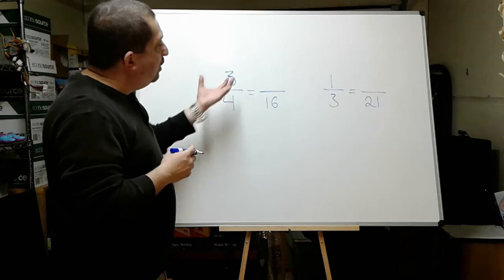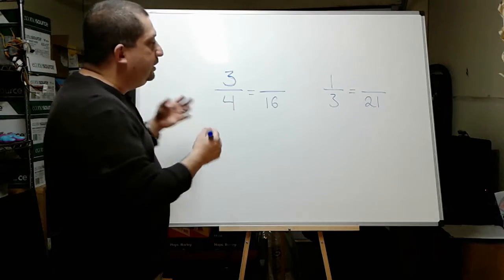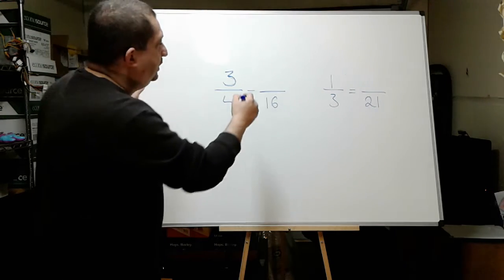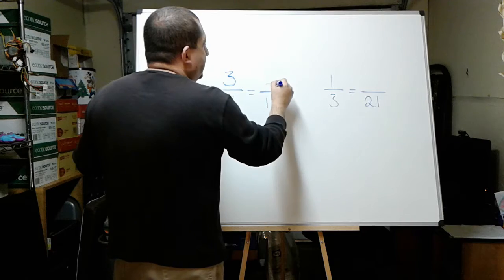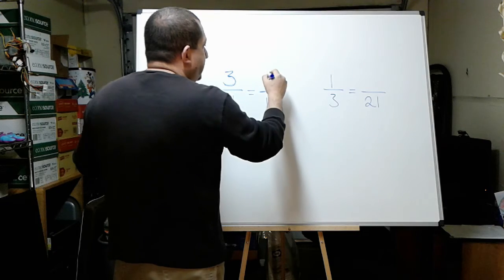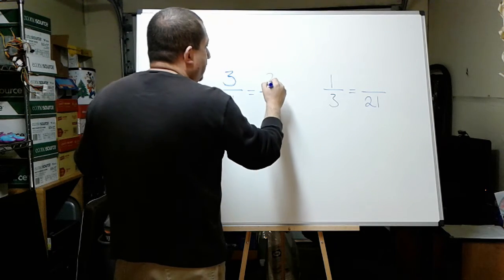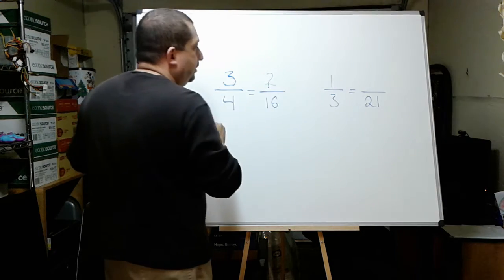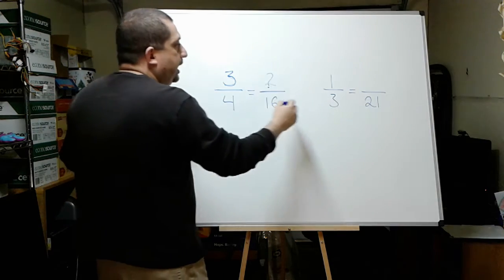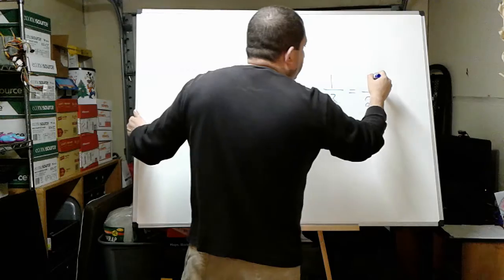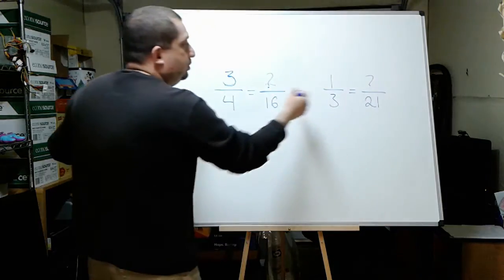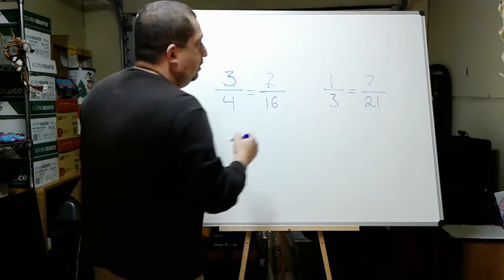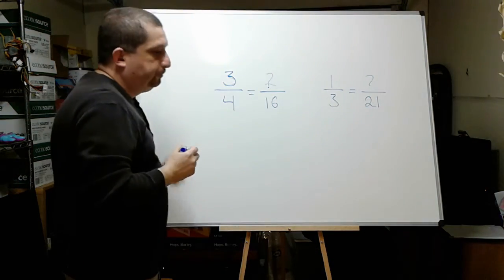So this is what we need to do — we just need to find the number that is missing in here and I have two examples in here. We need to find this number here, and I am also missing this number here. These are two separate problems by the way.